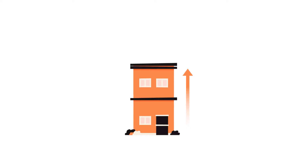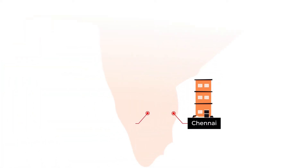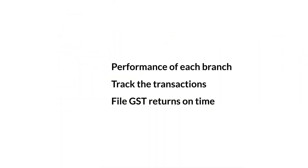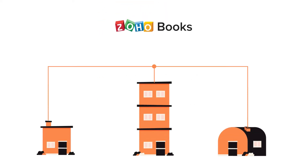As your business grows, you would branch out to new locations to cater to more people. And when you have multiple branches, you have to check the performance of each branch, track the transactions, file GST returns on time, and more. Wouldn't it be great if you can manage all your branches in one Zoho Books organization?